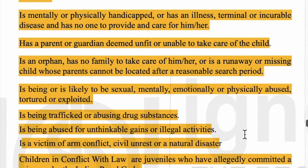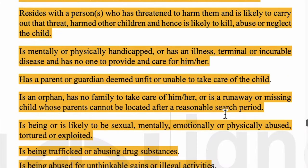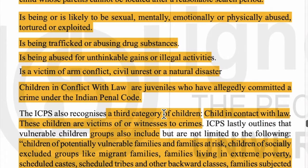The second ICPS category is Children in Conflict with Law — these are juveniles, meaning children under 18 years of age, who have committed a crime that is punishable under the Indian Penal Code, IPC. Whatever crime the child has committed that is recognized under the IPC, those children are called Children in Conflict with Law.